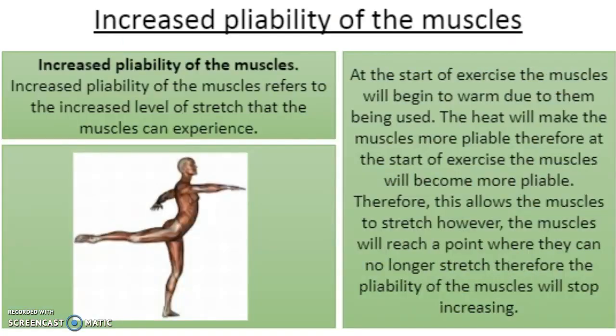Increased pliability of the muscles simply refers to the level of stretch that the muscles can experience. At the start of exercise, the muscles will begin to warm up due to being used, and the heat will make the muscles more pliable, allowing more movement and stretch. However, the muscles will reach a point where they can no longer stretch, and therefore pliability will stop increasing.